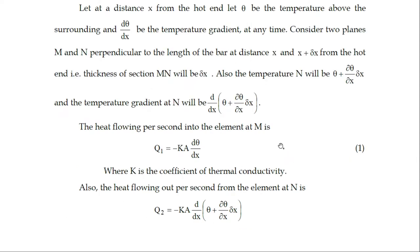We will calculate the heat flowing per second in this solid bar. The heat flowing per second into the element at M is given by the definition of thermal conductivity: q₁ = −kA(dθ/dx), where k is the coefficient of thermal conductivity, A is the area of cross section, and dθ/dx is the temperature gradient at plane M. This is equation 1.